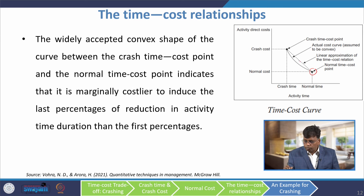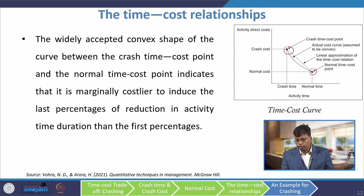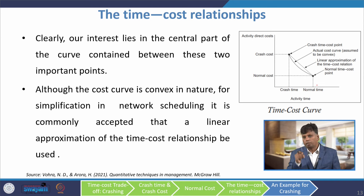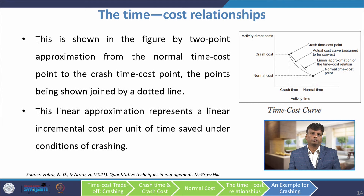If you are trying to reduce time further toward the crash point, the cost will be high. Our interest lies in the central part of the curve between the normal time-cost point and the crash time-cost point. Although the cost curve is convex in nature, it is commonly accepted in network scheduling to use a linear approximation of the time-cost relationship, represented by a dotted line between the two points. This linear approximation represents a linear incremental cost per unit of time saved under crashing conditions.